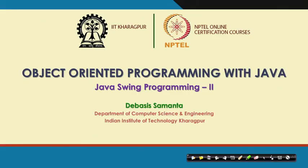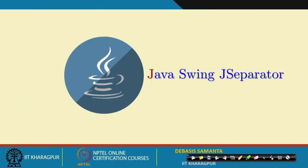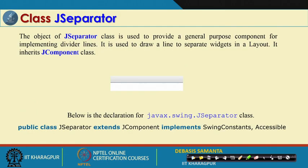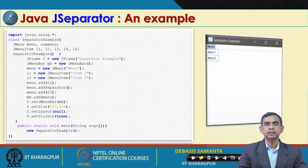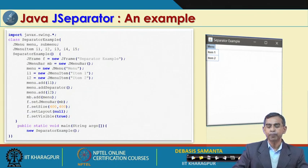We are discussing Java Swing and in the last module we covered some components. There are a few more components to cover in this module. The first component is JSeparator, which is new and was not in AWT. JSeparator divides the display area into two parts, has two constructors and two methods, and here is a simple example showing its usage in a window program.